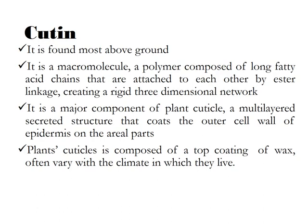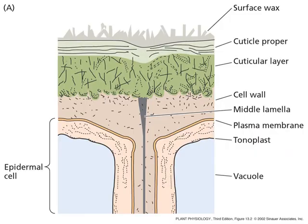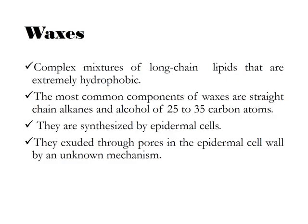Cutin is a major component of the plant cuticle — a multi-layered secreted structure that coats the outer cell wall of the epidermis on the aerial parts of the plant. The plant's cuticle is composed of a top coating of wax, which often varies with the climate in which plants live. The cuticle layer sits above the cell wall, middle lamella, plasma membrane, tonoplast, vacuole, and epidermis cell. Waxes are a complex mixture of long-chain lipids that are extremely hydrophobic.